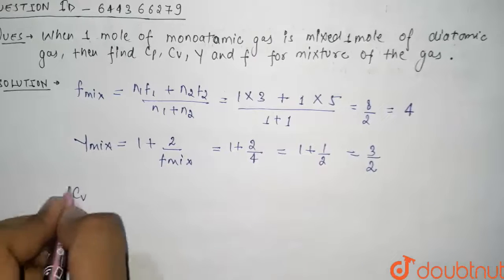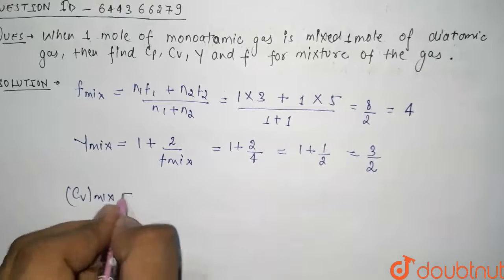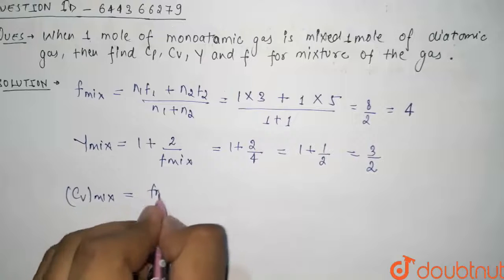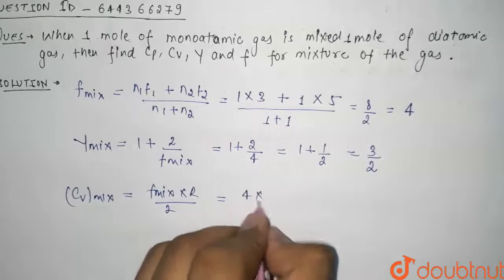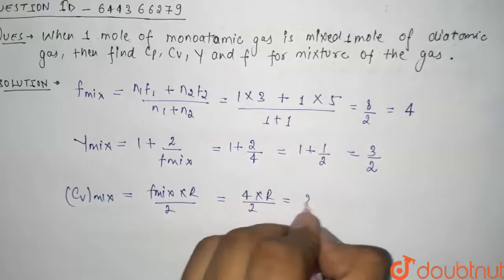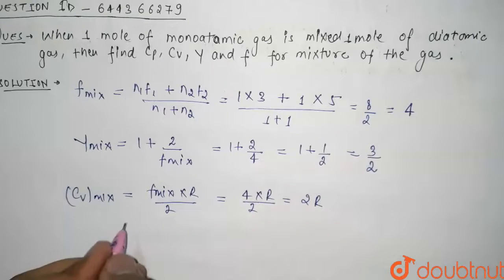Now we have to find Cv of the mixture. We know that Cv of the mixture is F of mixture into R divided by 2. So F of mixture is 4 into R divided by 2, that is 2R. So 2R is the Cv of the mixture.